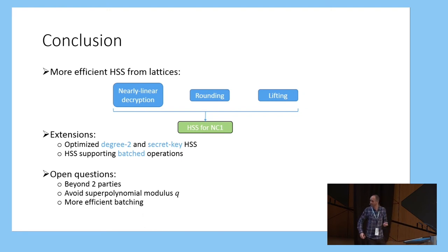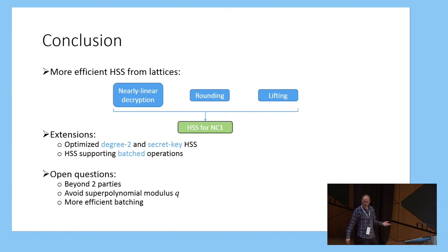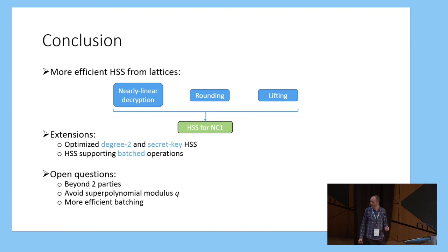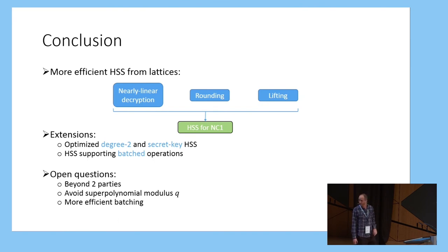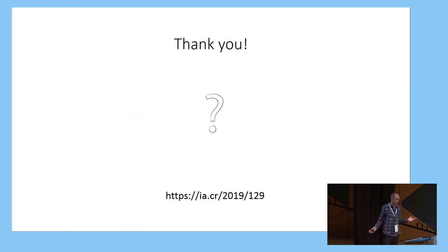To conclude, a few interesting open questions. First, all of the techniques we use seem restricted to the two-party setting — in particular the rounding and lifting tricks fail with constant probability as soon as you go to three parties, and it would be nice to have a way to work around this. Interestingly, this is also the case for pretty much all known efficient homomorphic secret sharing schemes; getting anything reasonably efficient beyond the two-party case is the big open problem. A related issue is that we require the modulus q to be superpolynomial in the security parameter, and reducing this would give much smaller ciphertexts. Finally, the extension to batched operations — compared with using similar techniques in somewhat or fully homomorphic encryption we have to work a little harder there, and it would be nice to get something more efficient.